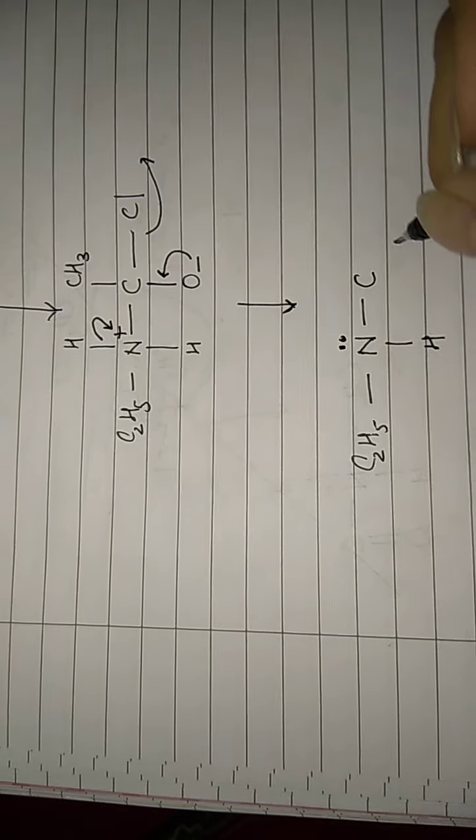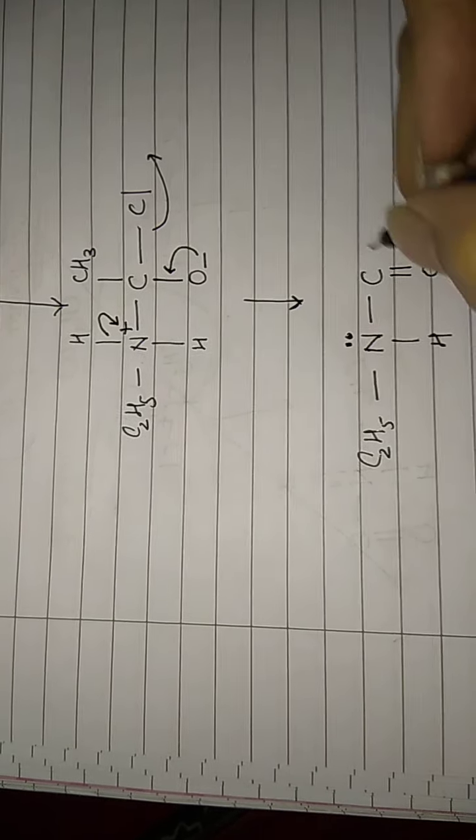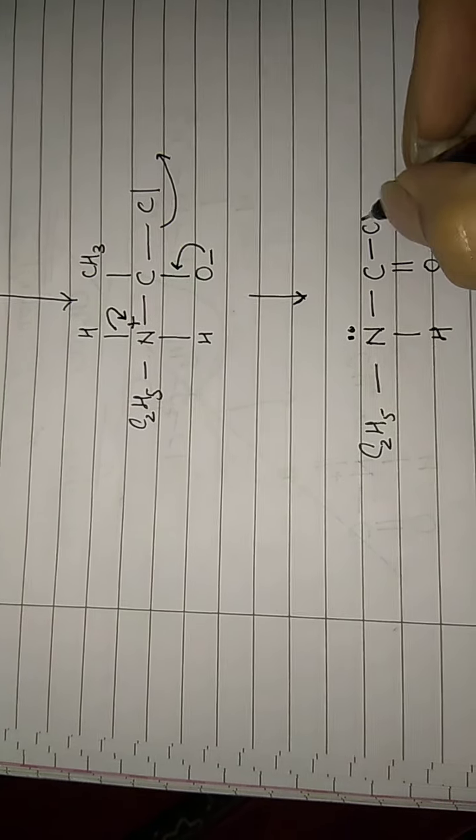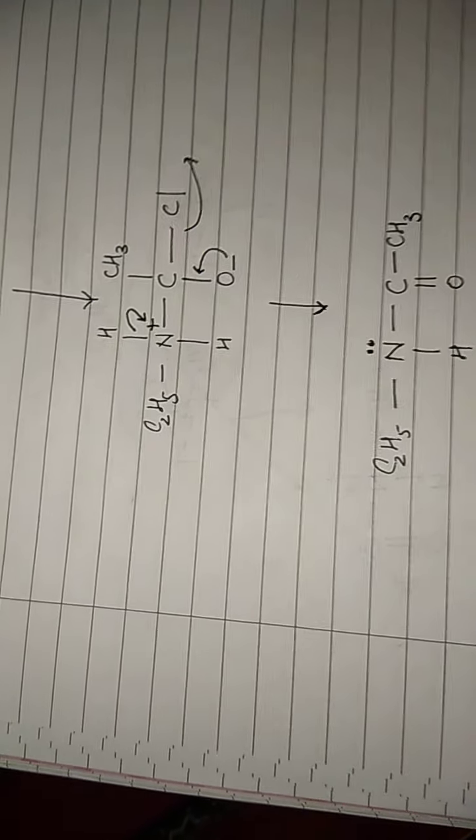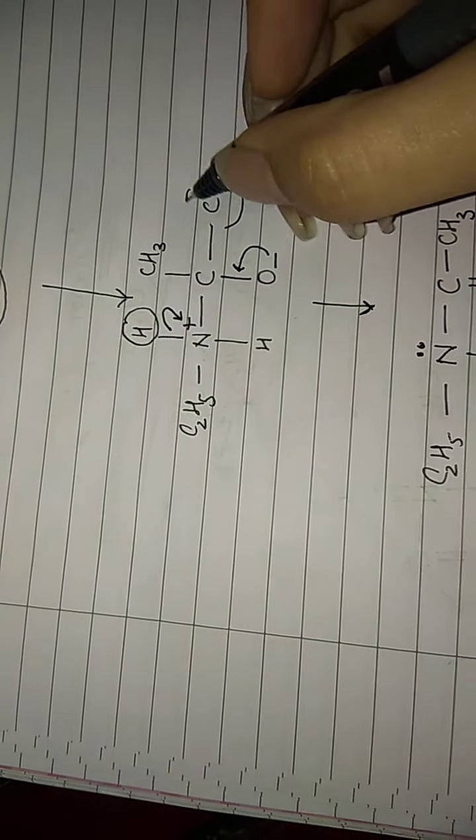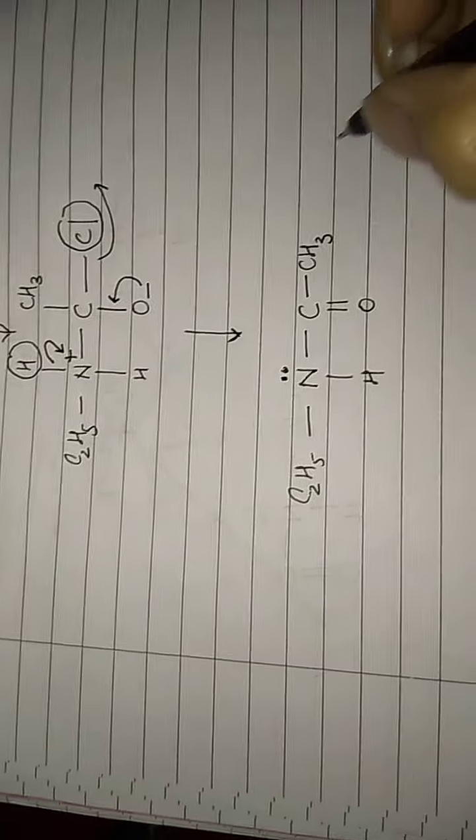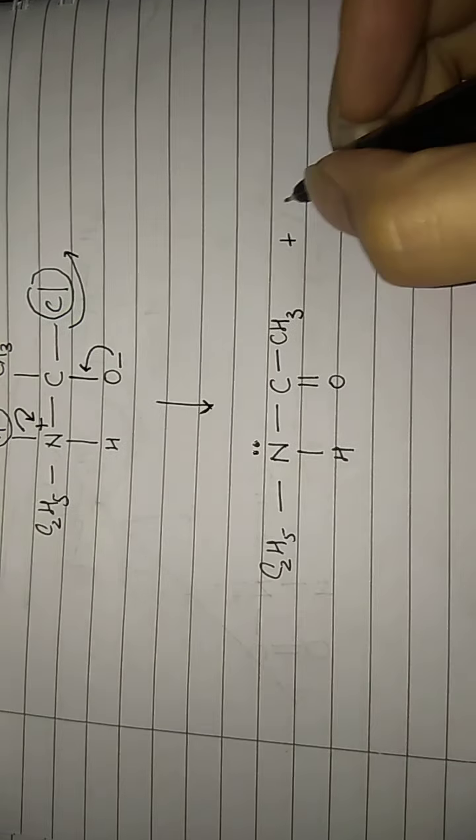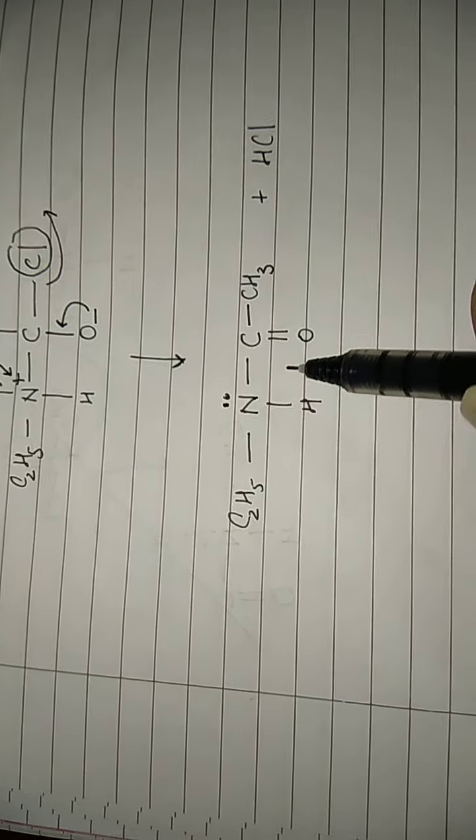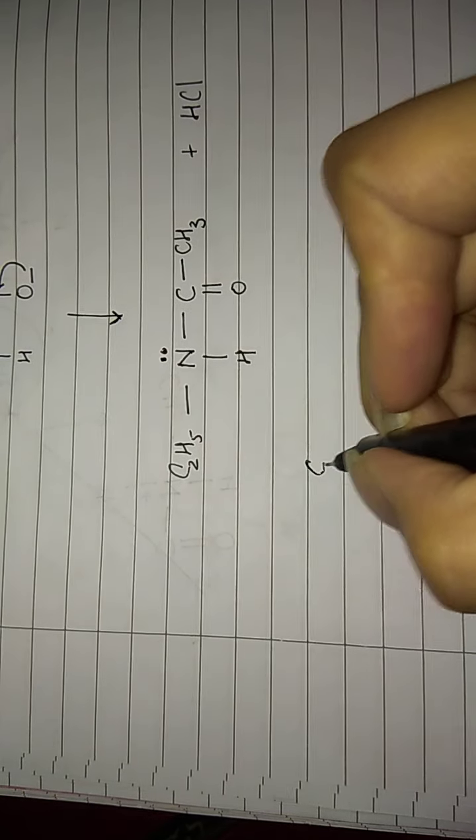So what do you get? C2H5, this has become N1H, it has got back its lone pair of electrons from here. H has been released, this bond comes like this, it becomes C double bond O. CL has left, so this carbon has just one more CH3. Two things have been released: H and Cl, so the byproduct is HCl.